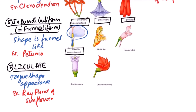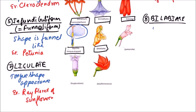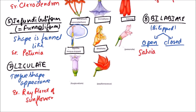The next type is Bilabiate. Labia means lip, so there are basically two lip-like structures. That's why this is known as bilabiate. If these lips are wide apart, it is known as the open type, and if the lips are close to each other, it is the closed type. The examples include Salvia in the open type and Antirrhinum in the closed type.